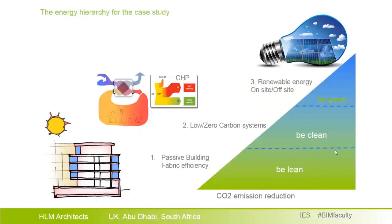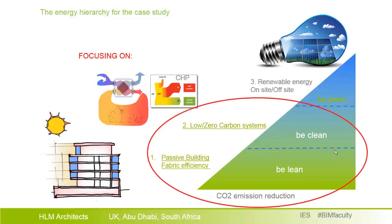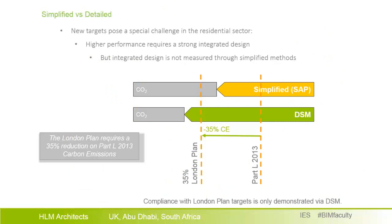Going back to the case study and considering the carbon emission reduction hierarchy, we have very little scope for renewable energy on site. So we were focused on the fabric-first and building services efficiency steps in the hierarchy, meaning maximum efficiency must be obtained through building design and system efficiency. New government and local authority targets are becoming more and more challenging in the residential sector, and a higher performance requires strong integrated design, especially when you cannot use renewables. The problem is that integrated design is not correctly measured by simplified methods, which is what is currently being used in the residential sector.